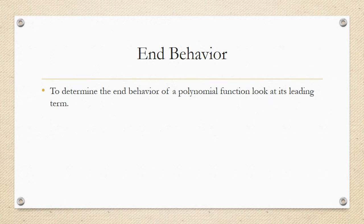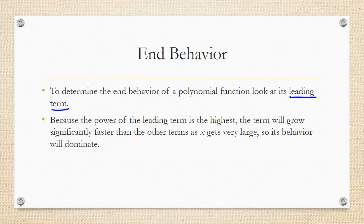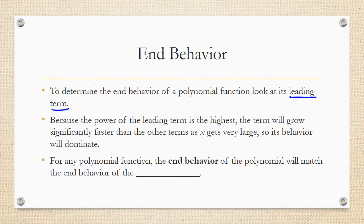For the end behavior of a polynomial, to determine it, you look at its leading term. Because the power of the leading term is the highest, the term will grow significantly faster than the other terms as x gets very large, so its behavior ends up dominating. For any polynomial function, the end behavior of the polynomial will match the end behavior of the leading term. This is why it's so important to be able to figure out what that leading term is.